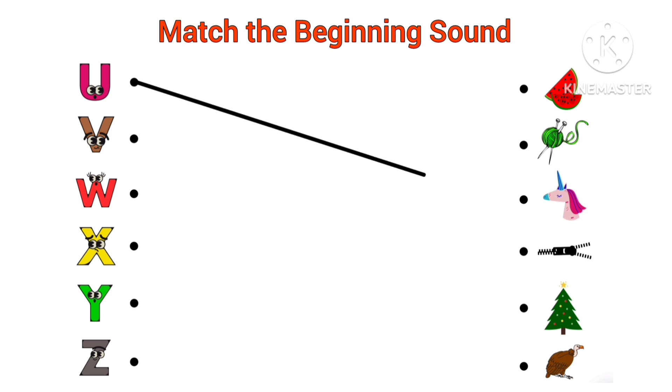U, U for unicorn. Beginning sound of unicorn is U. V, V for vulture. Beginning sound of vulture is V.